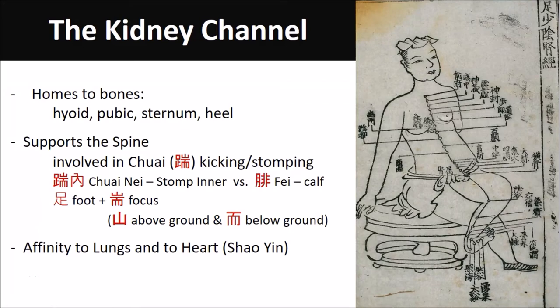The kidney channel arises at the bottom of the small toe, moves to the heart of the foot, then to kidney two, follows the back of the inner ankle, separates to enter the heel center, rises to the inner knee corner, the inside of the thigh, piercing the spine, subordinating the kidneys, and networking the bladder.